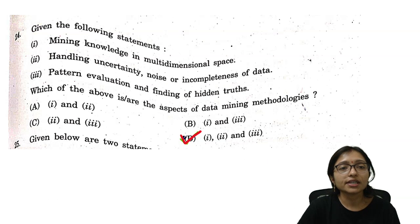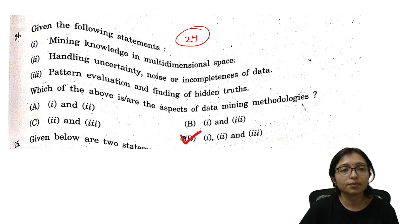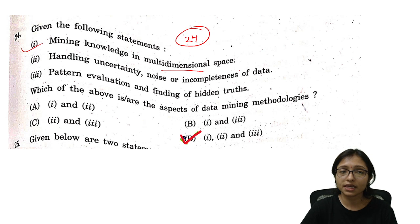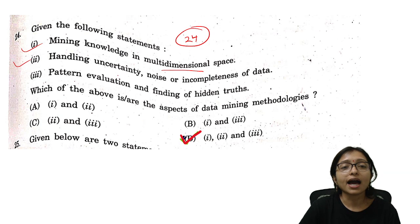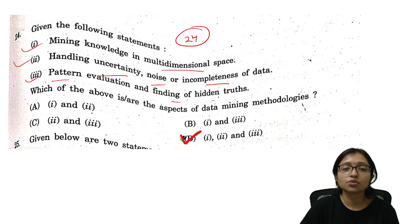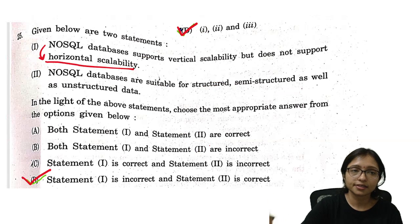Question number 24 is related to data mining. Mining involves knowledge of multi-dimensional space — that is correct. Handling uncertainty, noise, and incompleteness — also correct. Pattern evaluation and finding hidden truth — also correct. Since all statements are correct, option D is the correct answer.